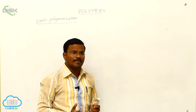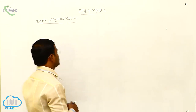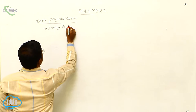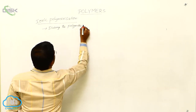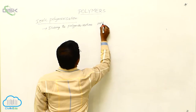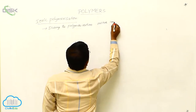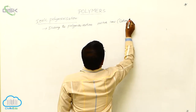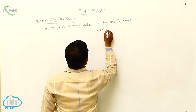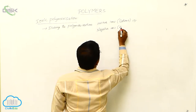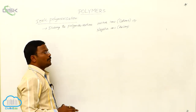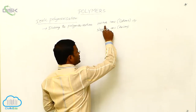Generally, the ionic species may be cations or anions. During the polymerization, there may be formation of positive species or positive ions, which are called cations, or negative species or negative ions, which are called anions, as intermediates.